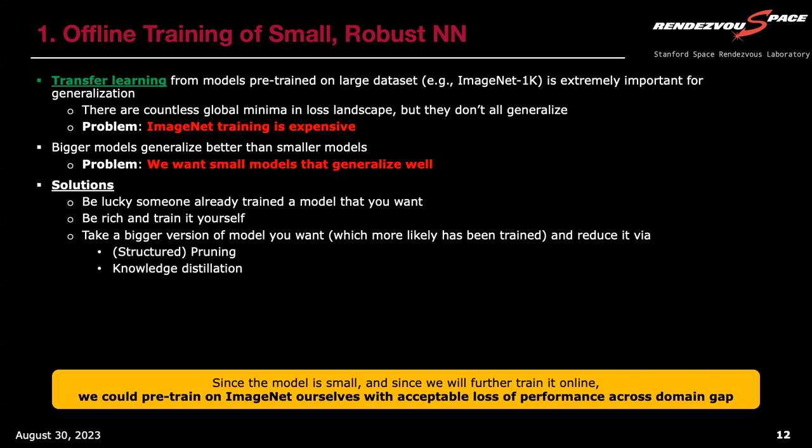For now, I'm taking the easy road. Since we need a model on the order of two to three million parameters and we're going to further train it online, I'll pre-train it on ImageNet for enough time — under 24 hours — and then fine-tune it on SPEED. That might give a couple degrees worse orientation performance, but it will still be a good enough starting point for online training. These are all things to consider when training neural networks for spaceborne applications.